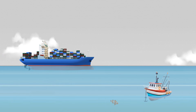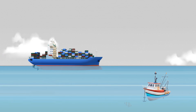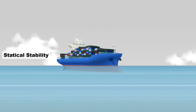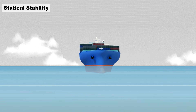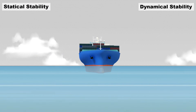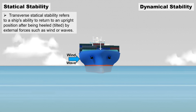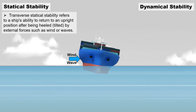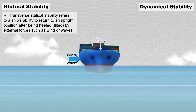In this video, we will explore two fundamental concepts that define a ship's stability behavior: statical stability and dynamical stability. Statical stability, or transverse statical stability, refers to a ship's ability to return to an upright position after being heeled or tilted by external forces such as wind or waves.